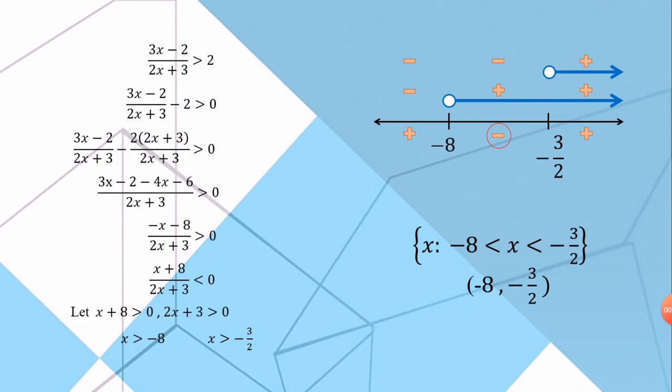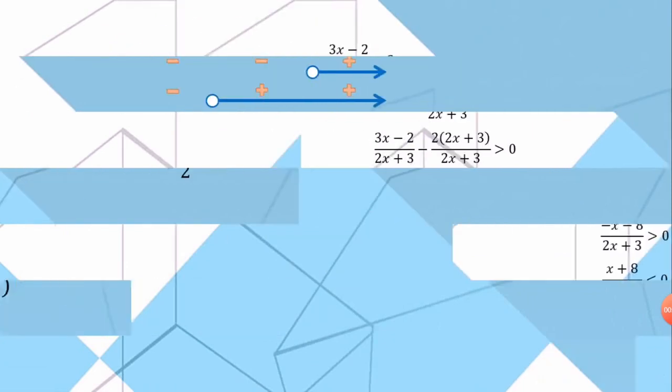Our final answer in the interval form will be x is greater than -8 and x is less than -3/2. If we write the answer in the set notation, our answer will be (-8, -3/2) in a curve bracket.